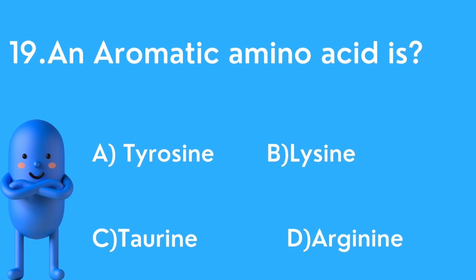Nineteenth question: Aromatic amino acid is — options are A) Tyrosine, B) Lysine, C) Threonine, D) Arginine. The correct answer is tyrosine. Aromatic amino acids include tyrosine, phenylalanine, and tryptophan.